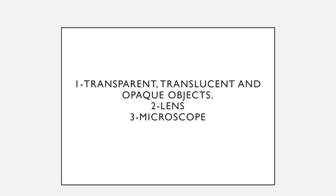In this chapter we'll discuss transparent, translucent, and opaque objects with their examples, then about lenses and their uses, and finally about the microscope.